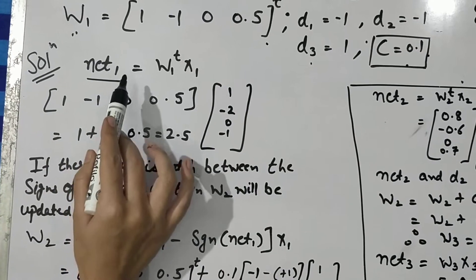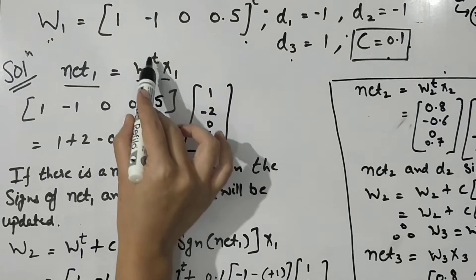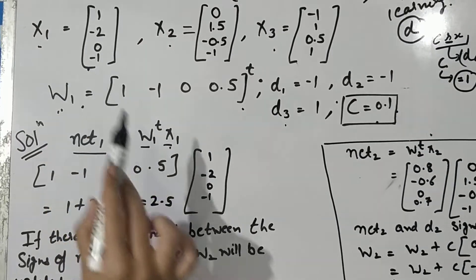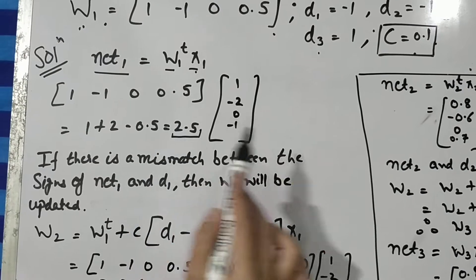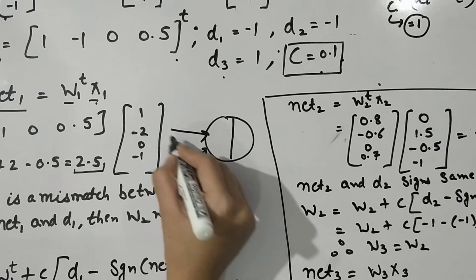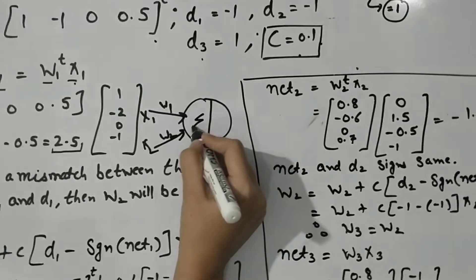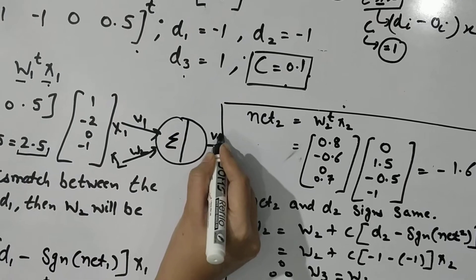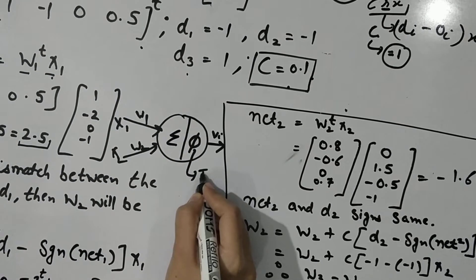The first step is to evaluate the value of 'net'. We compute net by multiplying the weight vector with the input value — taking the weight values and the input values and multiplying them together. You will get an output value of 2.5. In the neural network, x is the input and weights act as synaptic weights, and then you sum all those values.